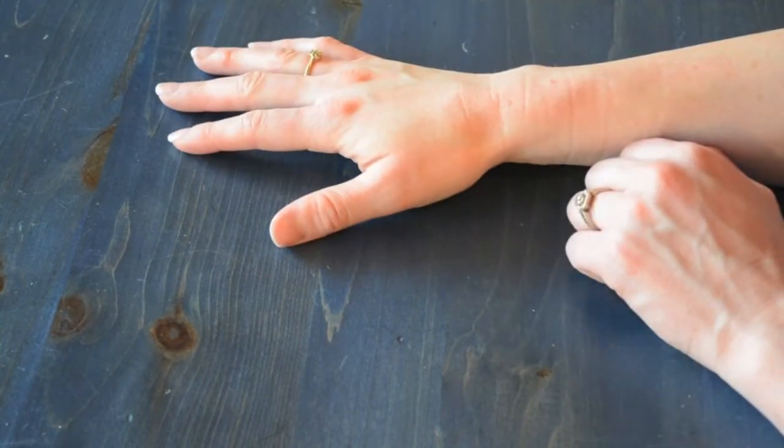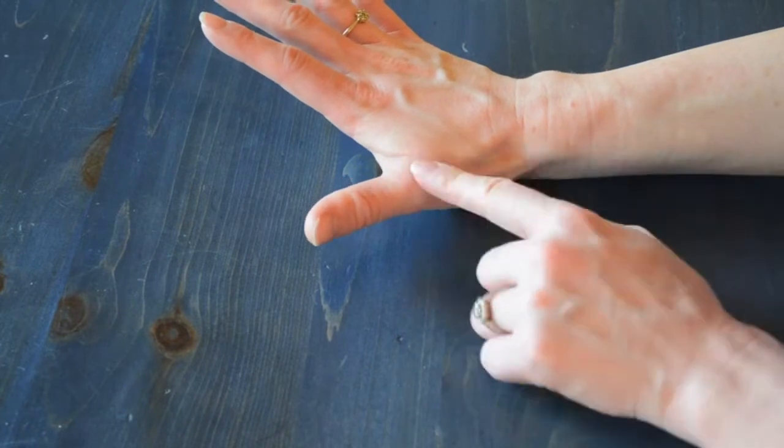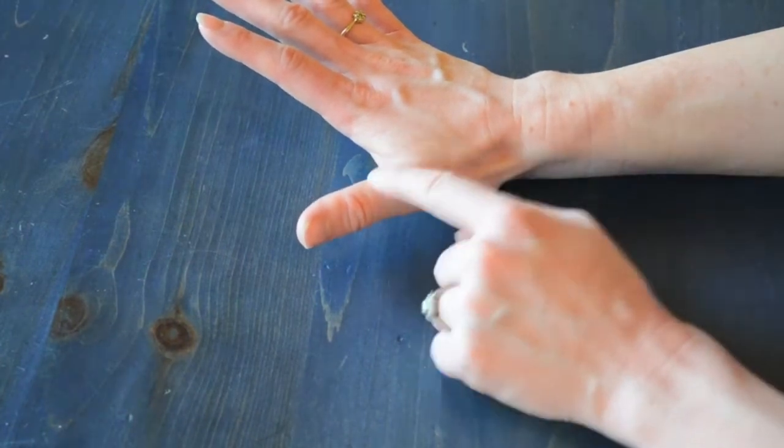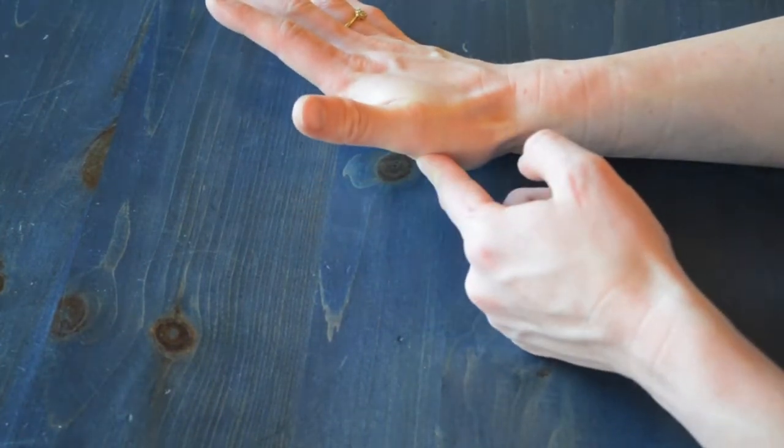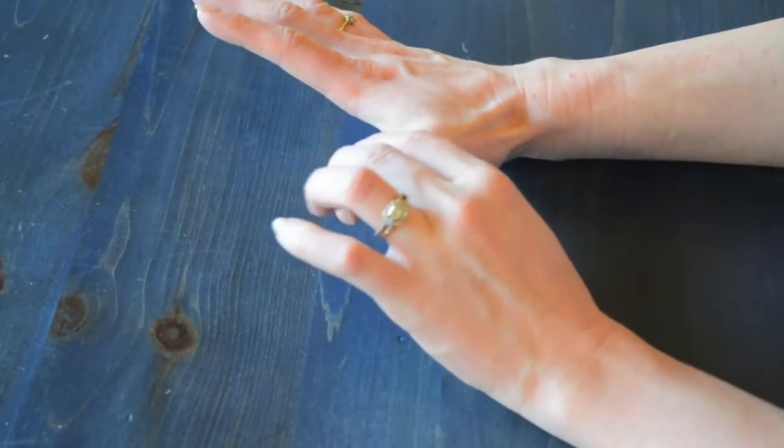The thumb does a lot of stuff. So for the metacarpophalangeal joint, you're going to have your ulnar collateral ligament, your radiocollateral ligament on either side here.